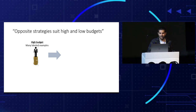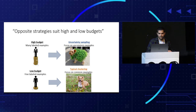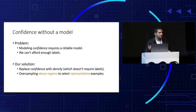To summarize this section: we claim there is an opposite strategy for high and low budgets. In high budgets, we agree with the active learning literature — we should perform uncertainty sampling and focus on uncommon examples. However, we predict a new finding: in low budgets, we should focus on representative examples that are easier to learn. Now we want to select samples that are easier to learn, but we face a problem — we don't have labels or have very few. So we need to model confidence without a model.